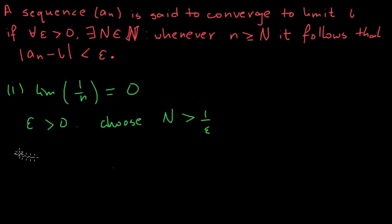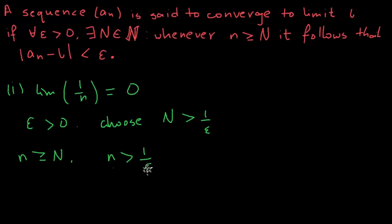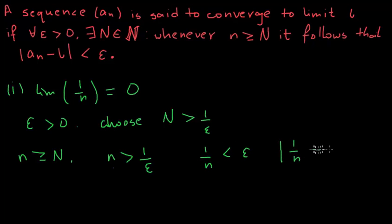Then whenever n is greater than N, n would be greater than 1/epsilon, and 1/n would be less than 1/epsilon, which is less than epsilon. Therefore |1/n − 0| is less than epsilon. This completes our proof.